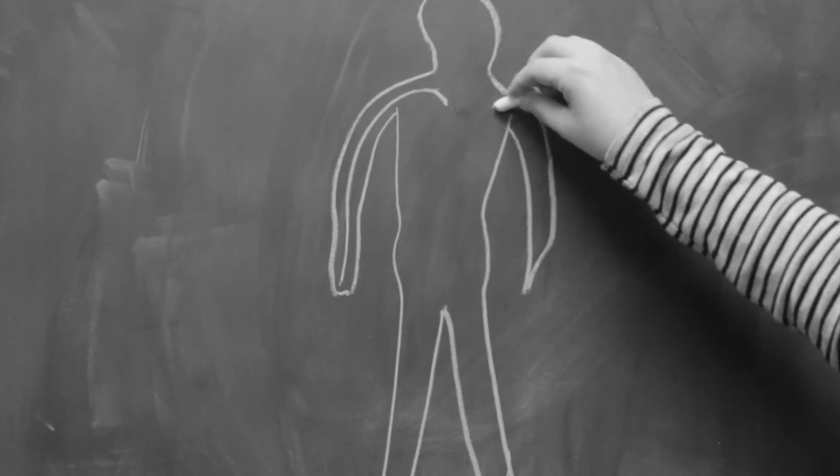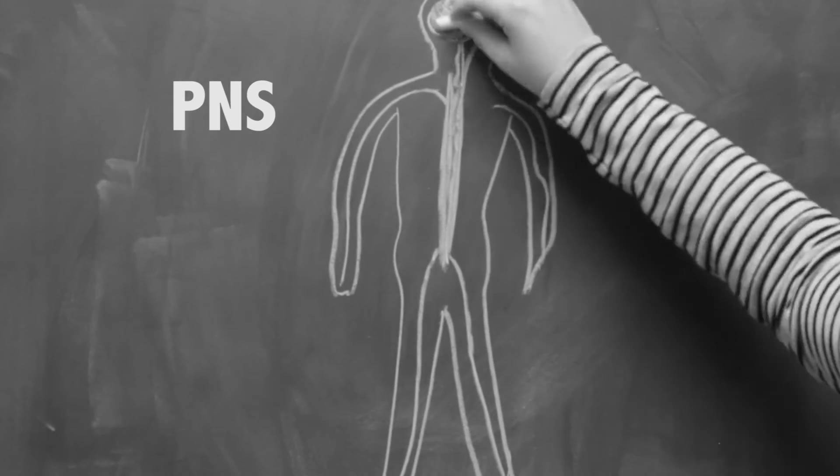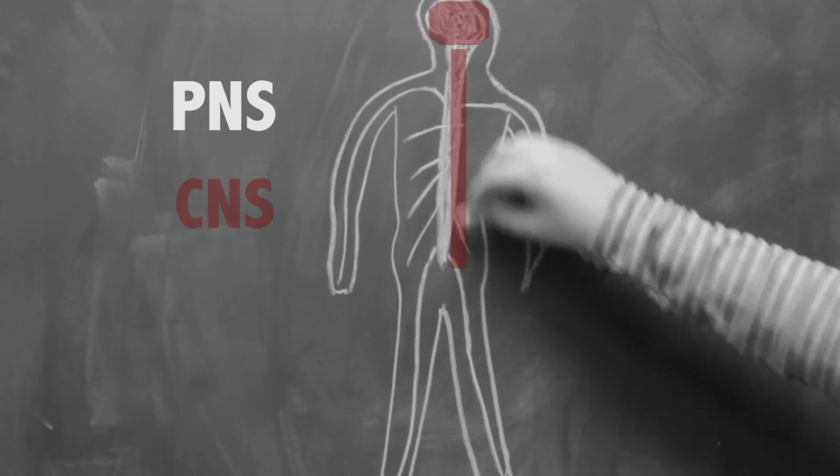The neurons of the PNS include all of the neurons of the body that are present outside the brain and spinal cord, as the neurons in these two regions make up the central nervous system.